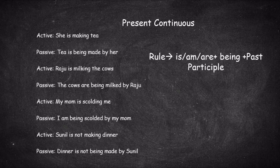For a negative present continuous: 'Sunil is not making dinner' becomes 'Dinner is not being made by Sunil.' The rule for the negative is: object, then the be form, then 'not,' then 'being,' then the past participle, then 'by' and the doer. The rule for present continuous passive is: is / am / are plus 'being' plus the past participle. For negatives: is / am / are plus 'not' plus 'being' plus the past participle.